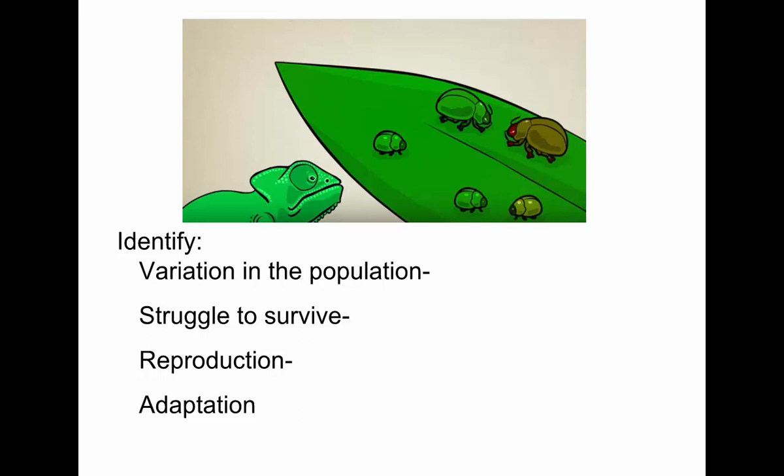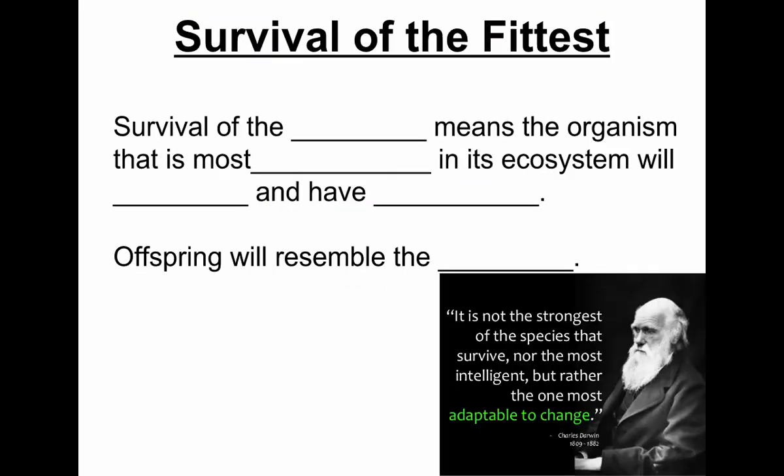The green ones are going to be less likely to be eaten, more likely to survive, more likely to reproduce. When they have little baby insects, what are they going to be like? Green. Maybe some will be brown because there's that natural variation — but what happens to the brown ones? They get eaten. And so over a period of time, this entire species of insects may evolve to be green in color.